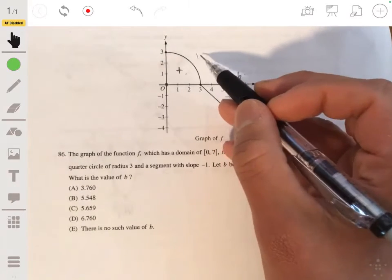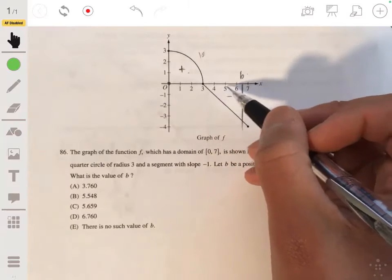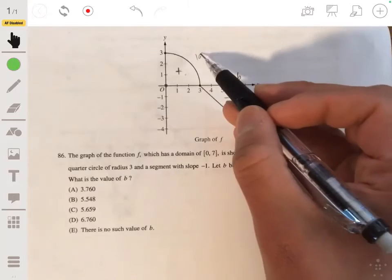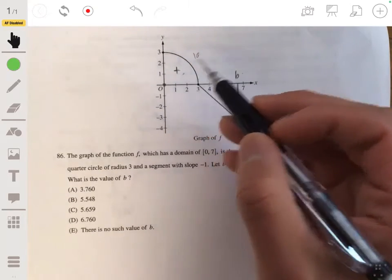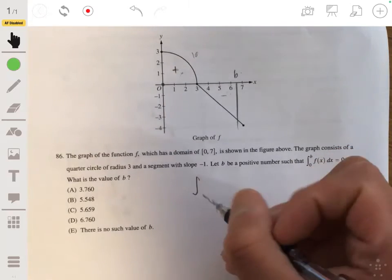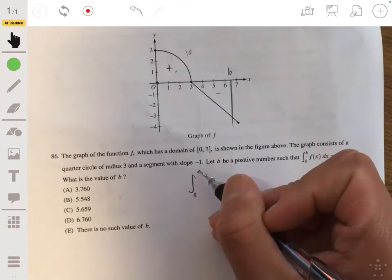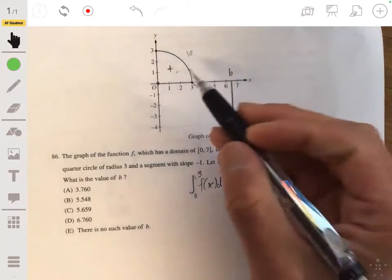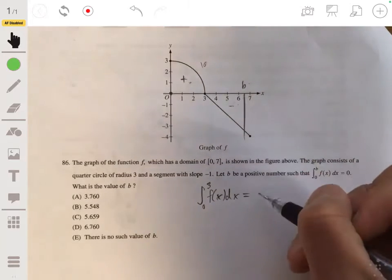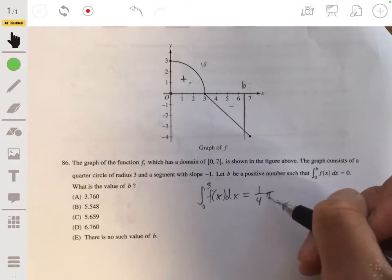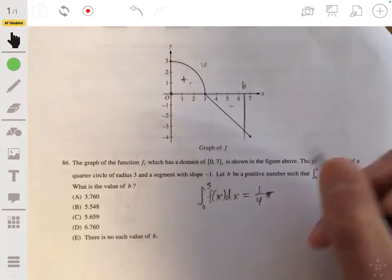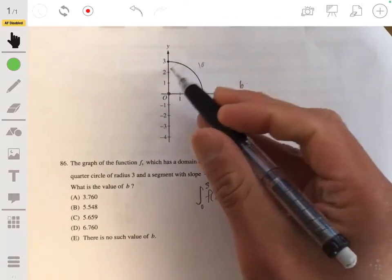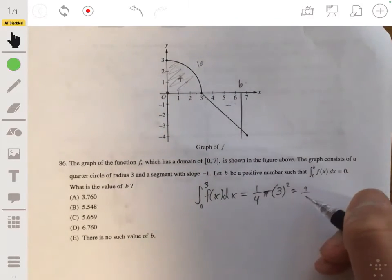Whatever this value is, we want to find up to what value such that this area of the triangle will be negative so that it cancels out with that. So let's find the area of this first, or the integral of that, so that would be the integral from 0 to 3 of f of x dx. Since we're told it's a quarter circle, it's going to be 1/4 pi times the radius squared, whatever the radius is, and that's 3. So the area of that quarter circle is 9/4 pi.